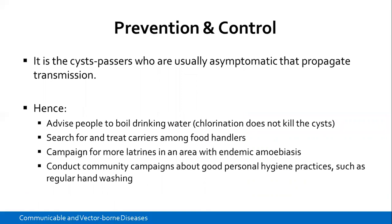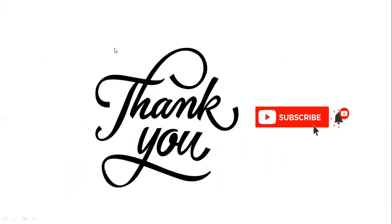For prevention and control, cyst passers who are usually asymptomatic are the ones who propagate transmission. Controlling these individuals can prevent a lot of spread. Advise people to boil drinking water so that cysts can be killed — they are not killed by chlorination, so chlorinated water alone will not do much. Search for and treat carriers among food handlers. Campaign for more latrines to reduce fecal contamination, and conduct community campaigns about good hygiene practices such as regular hand washing.